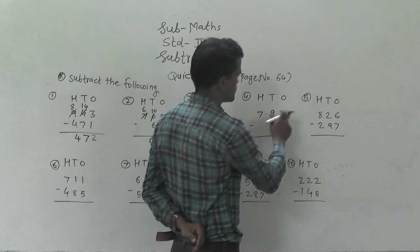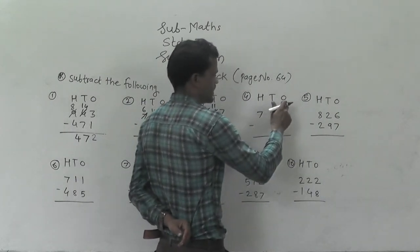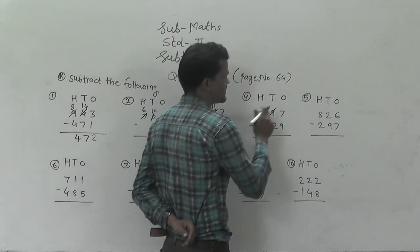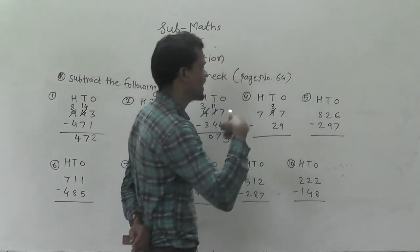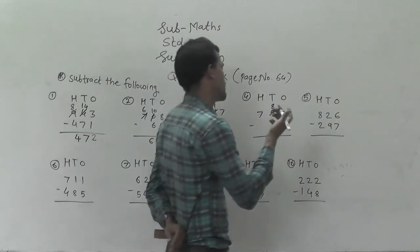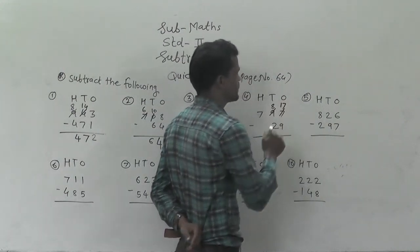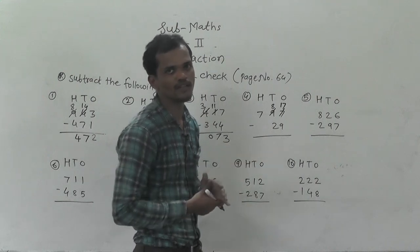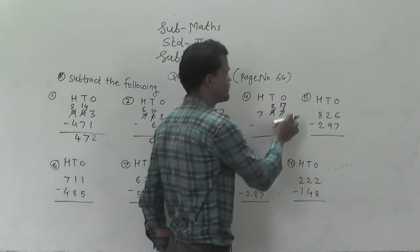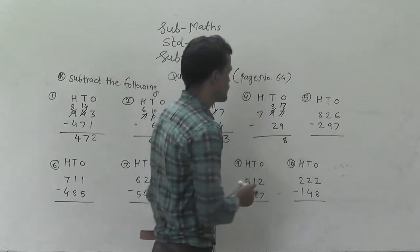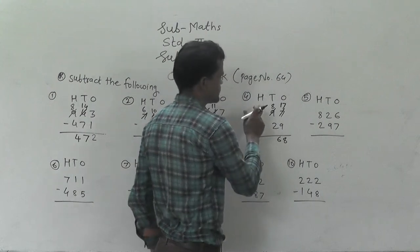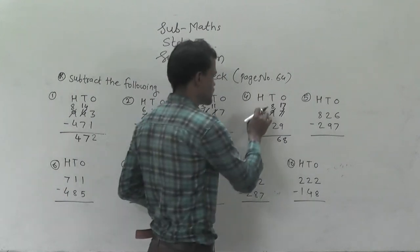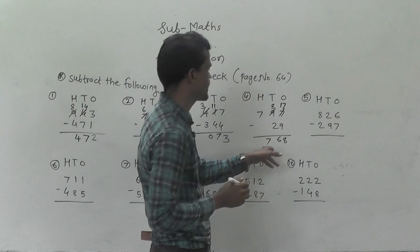Next: 790 minus 729. Here 7 minus 9 is not possible, so regroup the tens digit. 10 plus 9 is there, so regroup that 9 into 8 tens and 10 ones, and that 10 ones add into this 7 ones, so you will get 17 ones. 17 minus 9 is 8 — you can use backward counting. Then 8 minus 2 is 6. Here 7 minus 0 is 7. Answer is 768.